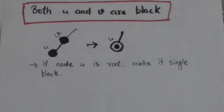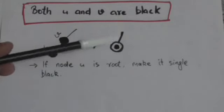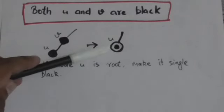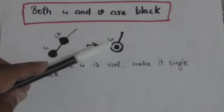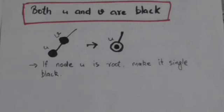To overcome this problem, we add an extra black color on node U — node U is now double black. When counting black nodes in a path containing node U, we count it as two black nodes. Our task reduces to converting this double black to single black. If node U is the root, we make it single black; in this case the black height of the red-black tree decreases by one. If node U is not a root, there are four cases.